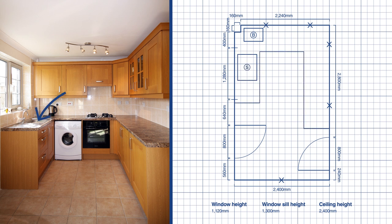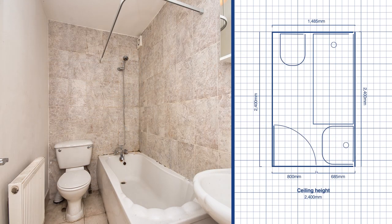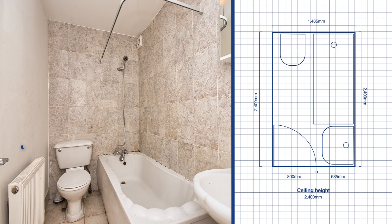Mark the location of the existing sink and the stop tap. For kitchens, mark the location of the gas and any extractor points, and in the bathroom note the location of the toilet waste — whether the waste goes into the floor, straight out of the wall, or left or right into a soil stack, as this will affect your toilet choices. Finally, mark down the location of any existing radiators or towel rails.